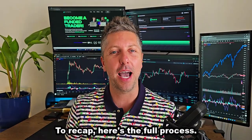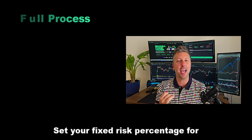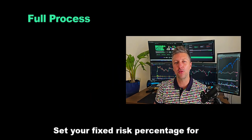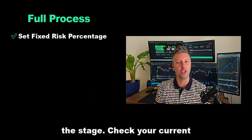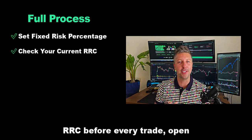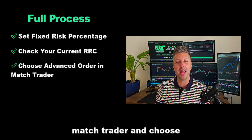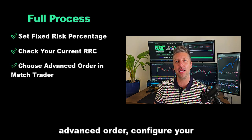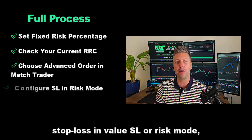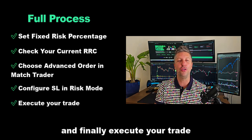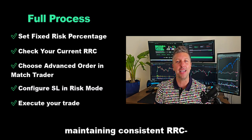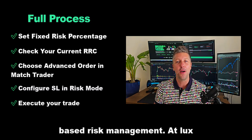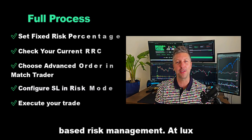To recap, here's the full process: Set your fixed risk percentage for the stage. Check your current RRC before every trade. Open Match Trader and choose Advanced Order. Configure your stop-loss in Value SL or Risk mode, and finally execute your trade, maintaining consistent RRC-based risk management.